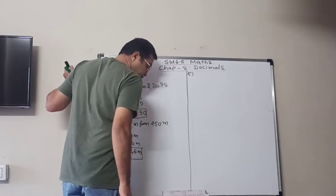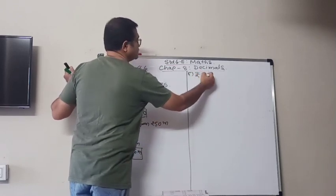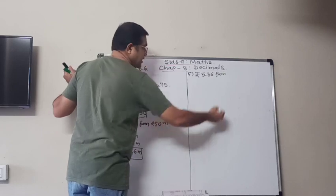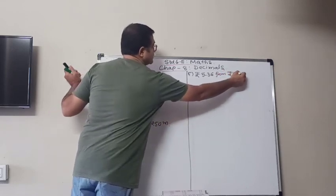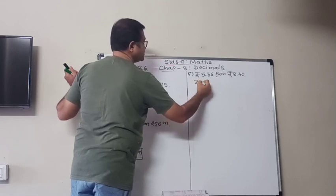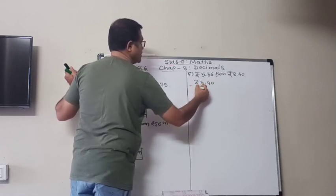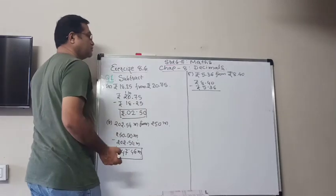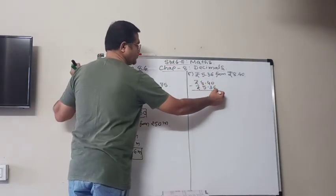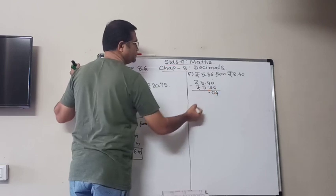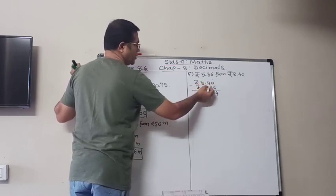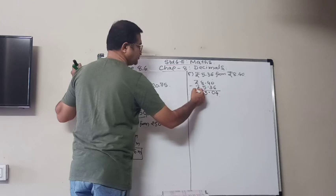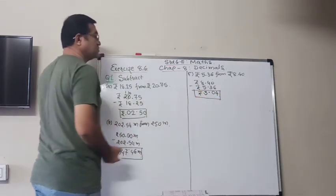C, rupees 5.36 from rupees 8.40. So now rupees 8.40 minus rupees 5.36. Borrow, so 10 minus 6, 4, 3 minus 3 is 0. So here no borrow because already there. So 8 minus 5 is 3. So answer is rupees 3.04.